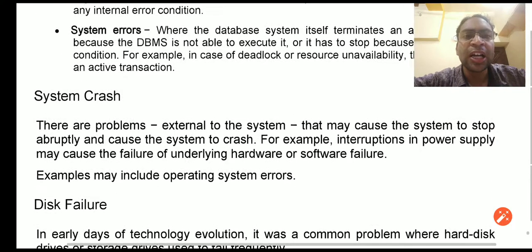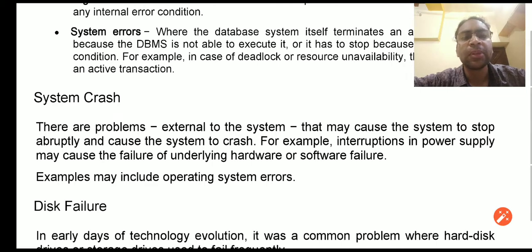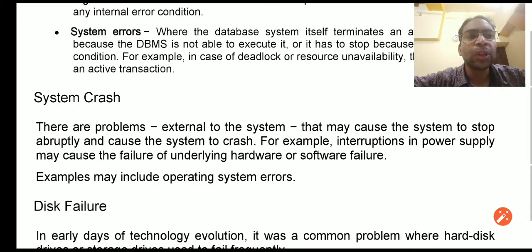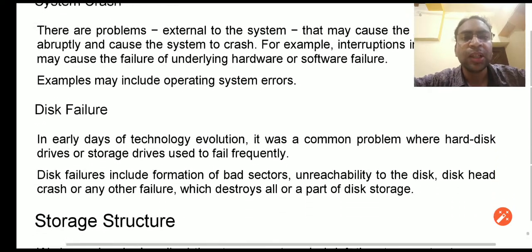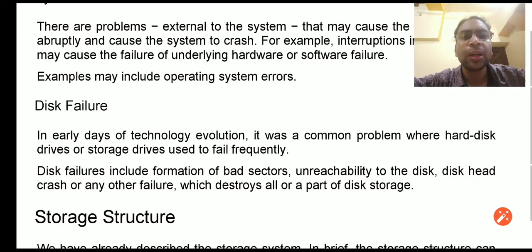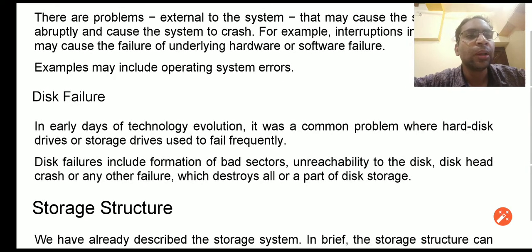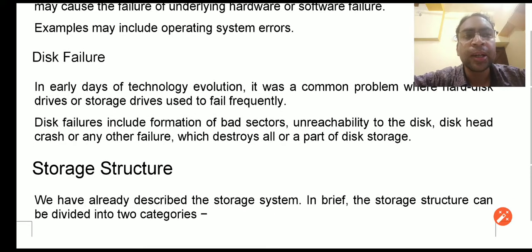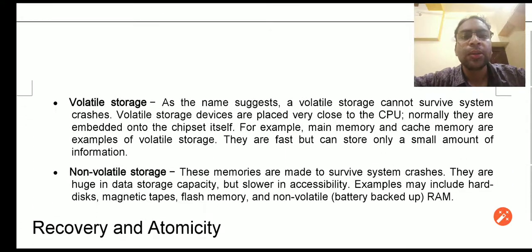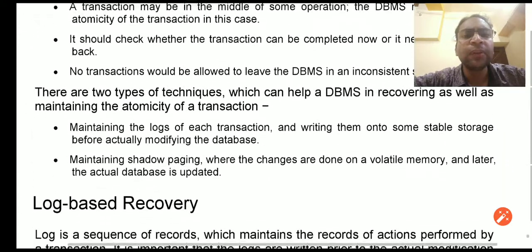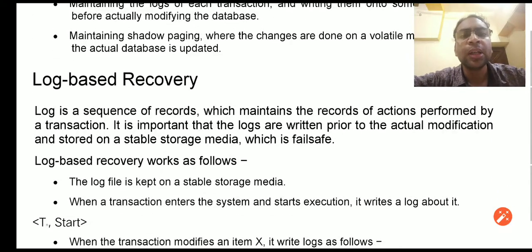System crash occurs whenever hardware or system software such as the operating system crashes — that is the biggest crash that can occur. From such a crash, we can recover only with the help of a remote database backup or a magnetic tape backup. Similarly, disk failure occurs when the hard disk or secondary storage fails, and again recovery requires a remote backup or a magnetic tape backup.